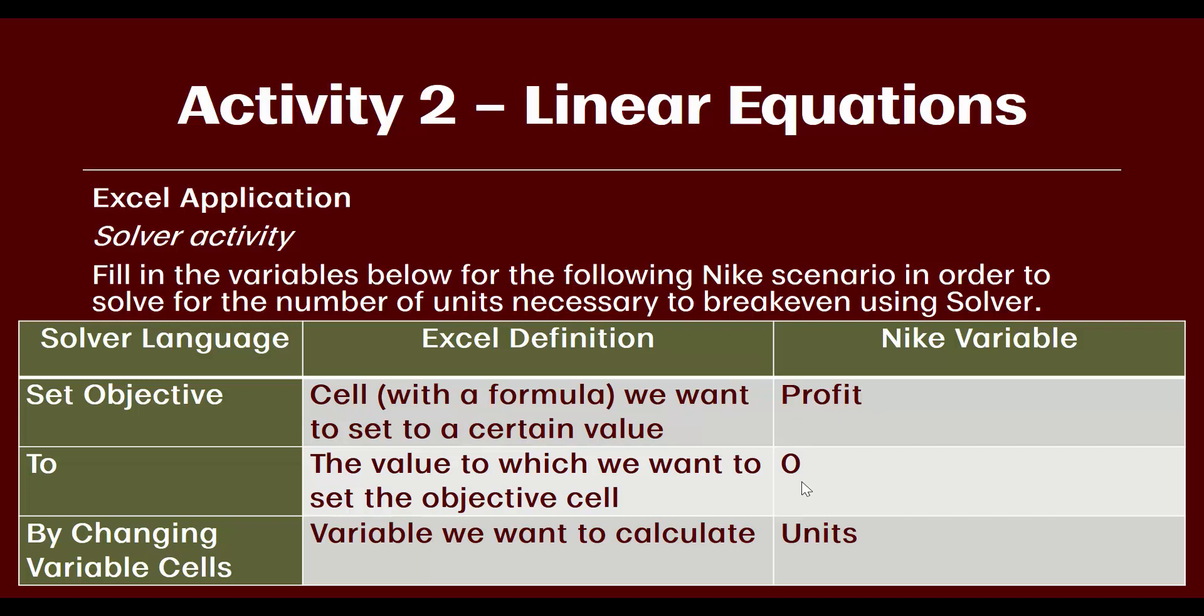Finally, we have an area that Excel labels by changing variable cells. This cell is where we would have our actual variable. This variable is what we want to change in order to achieve the objective we have set. In this case, in this Nike problem, we are trying to solve for units. So we will need a cell that has units in it. That would be our variable cell.